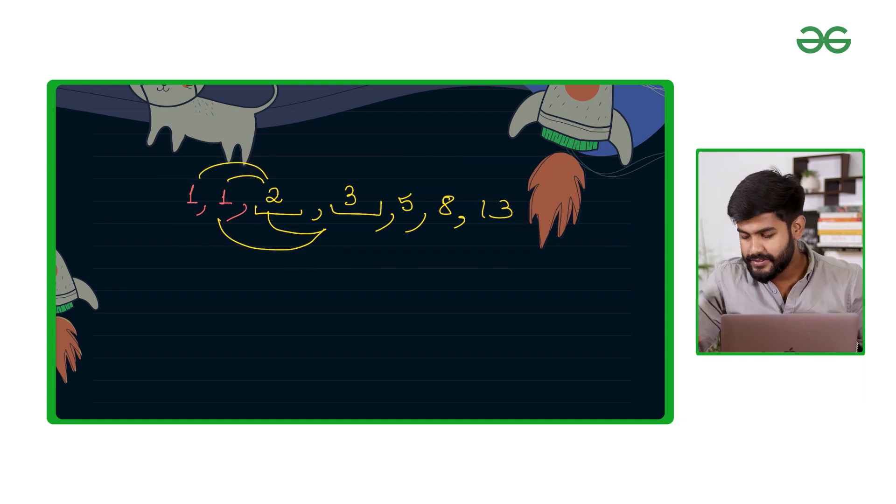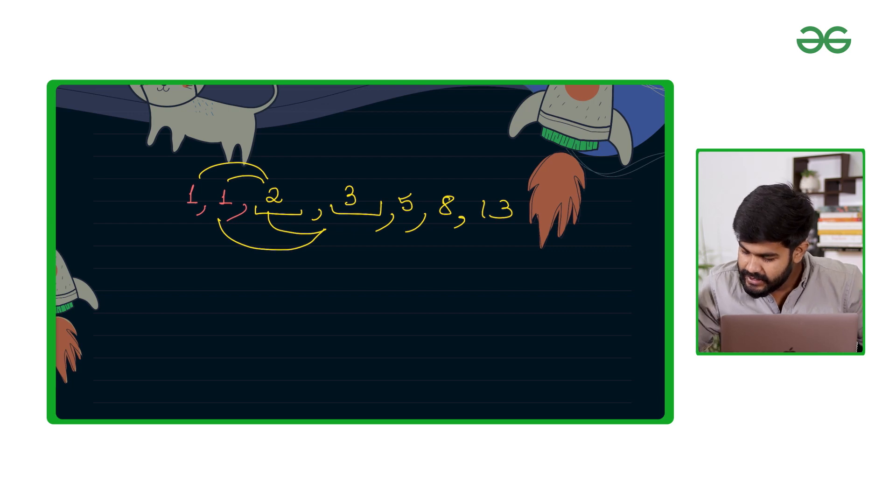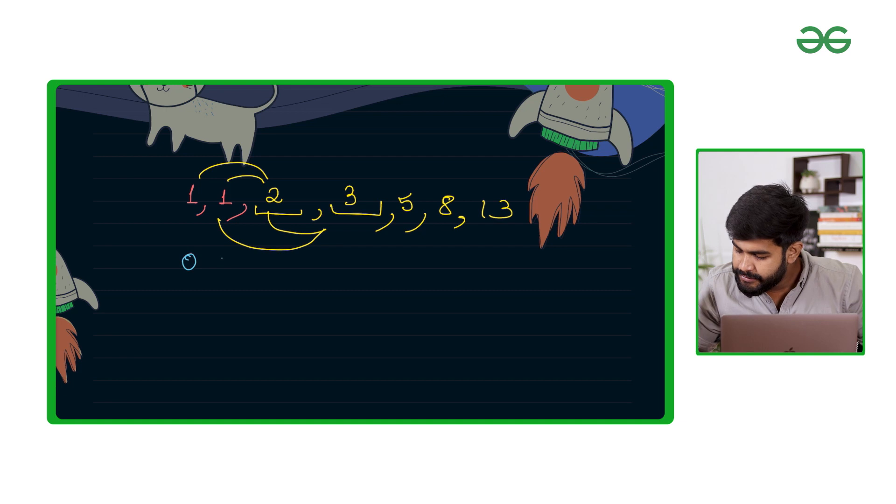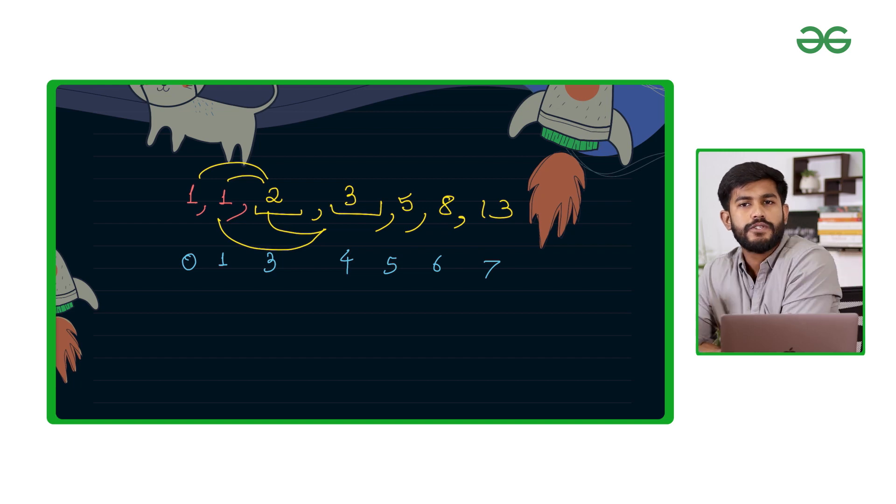If you observe this in the form of an array, this is the first index, this is the second index, third, fourth, fifth, sixth, seventh. This is how you need to return for n equals 7.